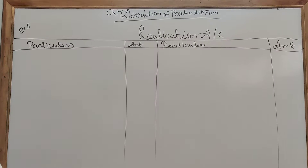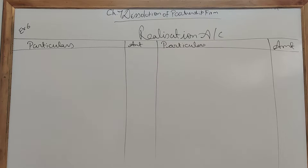Welcome back to the accountancy class. Our chapter going on is Chapter 7, that is Dissolution of Firm. In the previous two classes I told you about the theory part — modes of dissolution of the firm, meaning, and accountancy treatment. Section 40 deals with the accountancy process. First we are supposed to prepare the realization account, partner's loan account, partner's capital account, and finally cash and bank account.